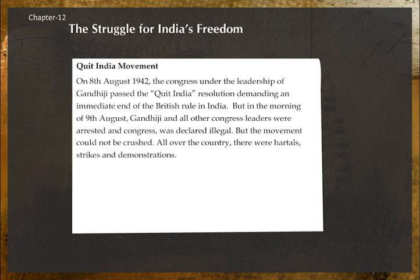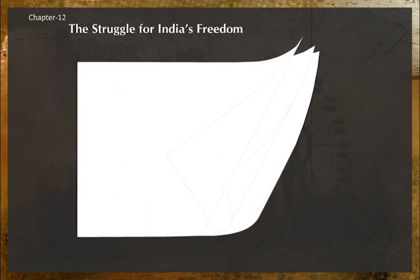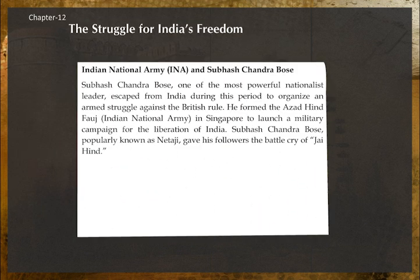Quit India Movement: On 8 August 1942, the Congress under Gandhi's leadership passed the Quit India resolution demanding an immediate end to British rule in India. On the morning of 9 August, Gandhi and all Congress leaders were arrested and the Congress was declared illegal. But the movement could not be crushed — all over the country there were hartals, strikes, and demonstrations.